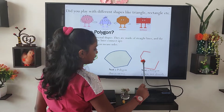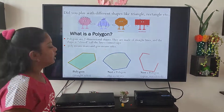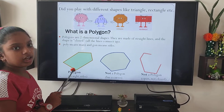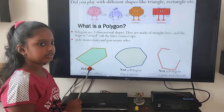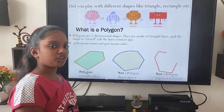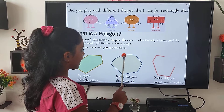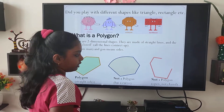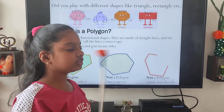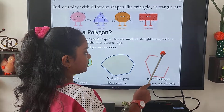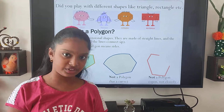Let's identify these three shapes — are they polygons or not? This first one is a polygon because it has all straight lines. The second is not a polygon because it has a curved line. The third is not a polygon because it is an open figure, not a closed figure.